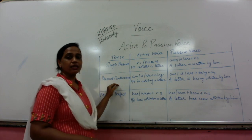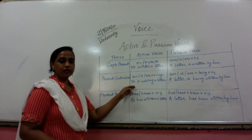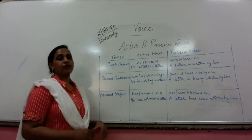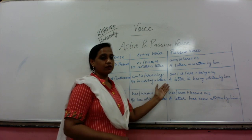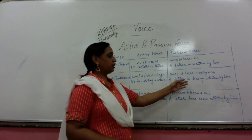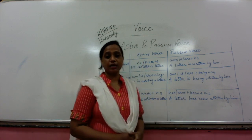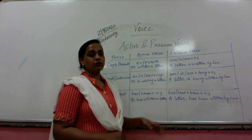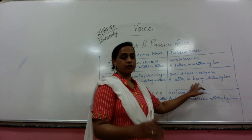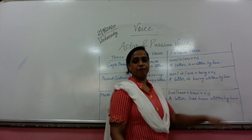When the sentence is in present continuous tense, the structure uses is/am/are + verb-ing. For example: 'He is writing a letter.' In passive voice, the object comes first: 'A letter is being written by him.' The word 'being' is added after the helping verb because the sentence is in continuous form, showing the action is in progress.